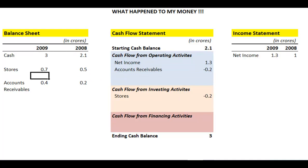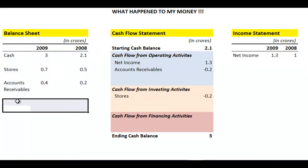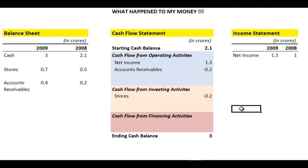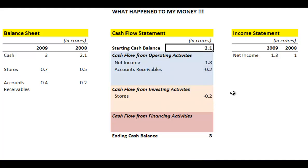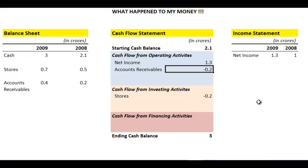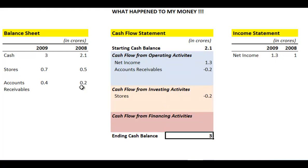Is that it? We have a column for financing activity, but based on this balance sheet there is no loan, and the income statement has no interest expense either. So there is no cash flow from financing activities. Now let's see if these cash flows reconcile 2.1 crores to 3 crores. If we sum all of this: 2.1 crores plus 1.3 crores is 3.4 crores, subtract 20 lakhs gives 3.2 crores, subtract another 20 lakhs gives 3 crores — and that is your ending balance of 2009. That is your simple cash flow statement.